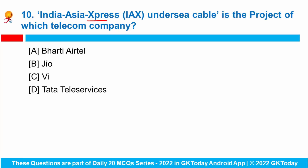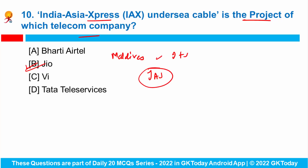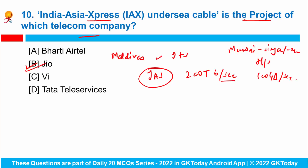Question number ten: the India Asia Express undersea cable is the project of which telecom company? Reliance Jio has announced that it will land the next generation multi-terabit undersea cable in Maldives to connect it with India and Singapore. This new India Asia Express undersea cable will provide over 200 terabit per second of capacity at a speed of nearly 100 Gbps. The system originates in Mumbai, connects to Singapore, with additional landings in India, Malaysia, and Thailand.